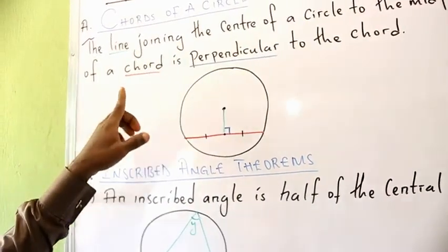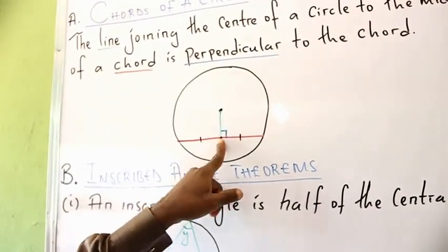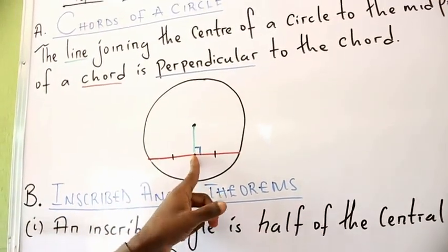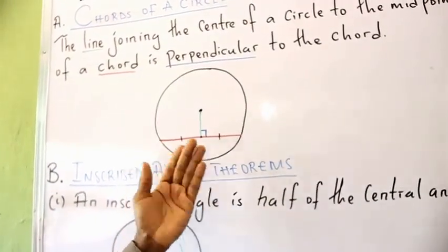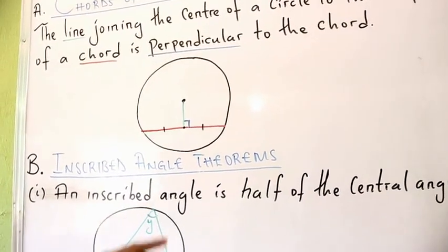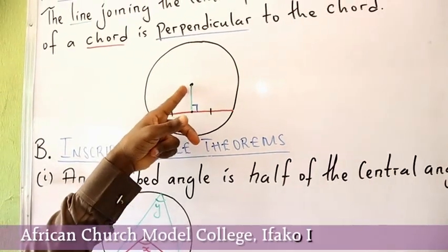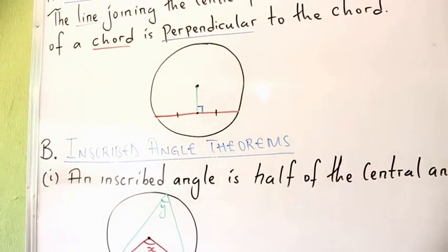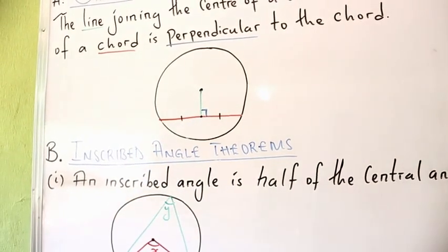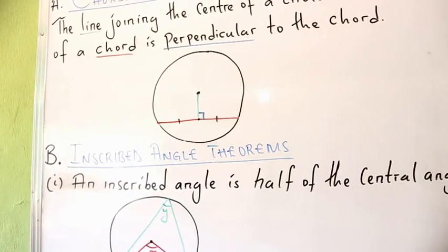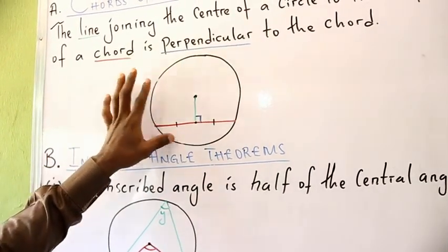The theorem states that the line joining the center of the circle to the midpoint of the chord is always perpendicular to the chord, and it bisects the chord into two equal halves. This is a very important theorem in mathematics, especially when solving problems involving a chord of a circle. Normally this type of question leads to the application of Pythagoras' theorem.